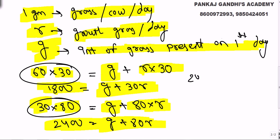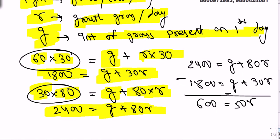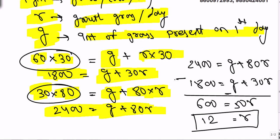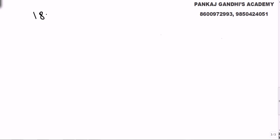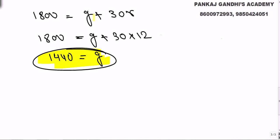Subtracting the two equations: 2400 minus 1800 equals (g + 80r) minus (g + 30r). We get 600 = 50r, so r = 12 grams per day. That means 12 grams of grass grow per day. Substituting back: 1800 = g + 30 × 12, so g = 1440.